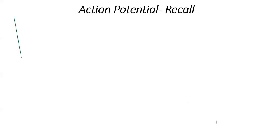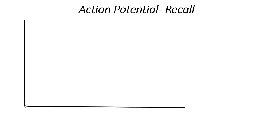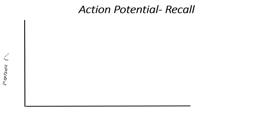We're reviewing the events of the action potential. Let's start out with a graph. On the y-axis, we've got the membrane potential in millivolts, and then we've got time on the x-axis in milliseconds.